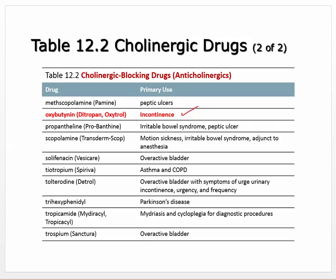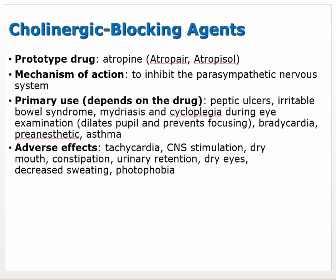Scopolamine is another anticholinergic — used for motion sickness and irritable bowel syndrome. Many of these are for overactive bladder, and one is for Parkinson's disease. Irritable bowel syndrome makes sense because blocking acetylcholine blocks motility and GI activity, depending on dose. Look those over, especially the ones discussed in class, and be aware of the ones emphasized.